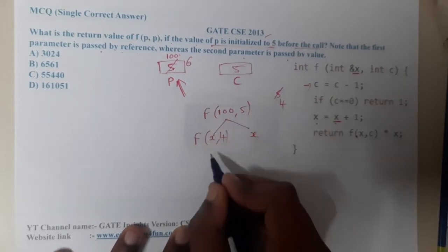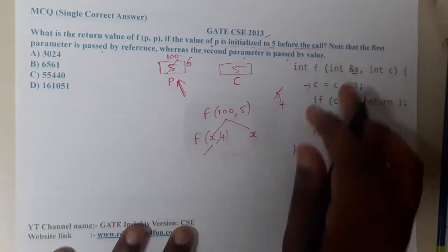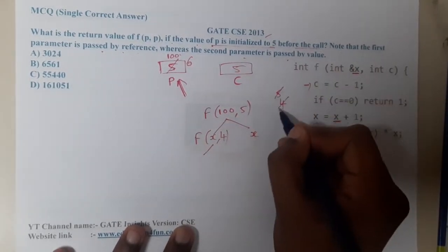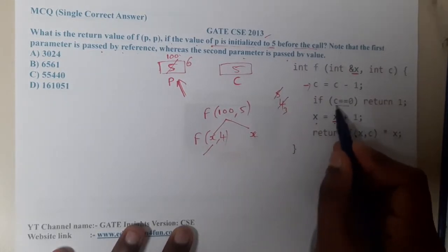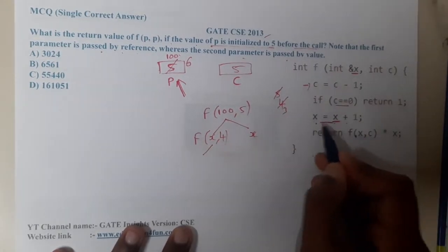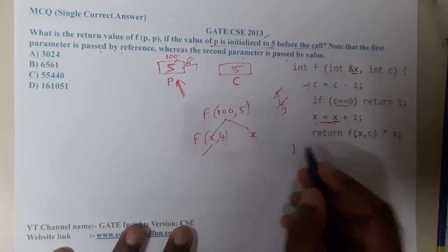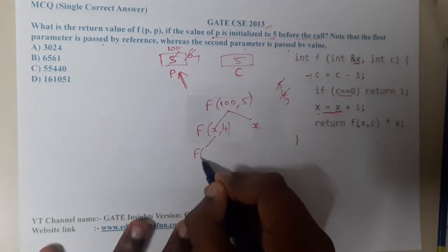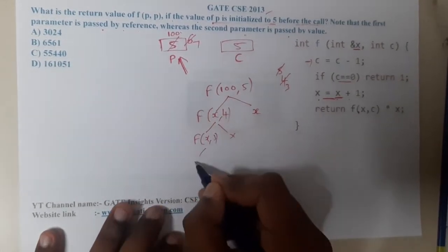Now this value is updating. Again you will come inside, reduce c to 3, check if c equals 0, increment to 7, and call the function x comma 3. In this way, until where will it call?